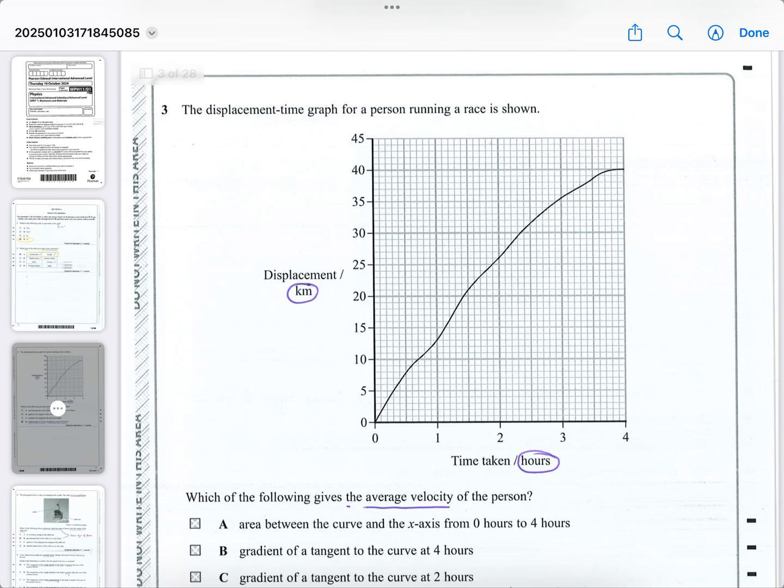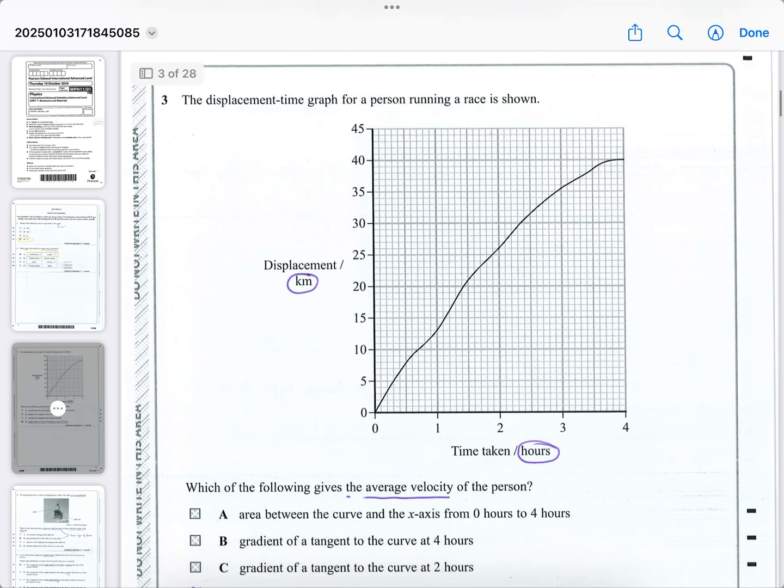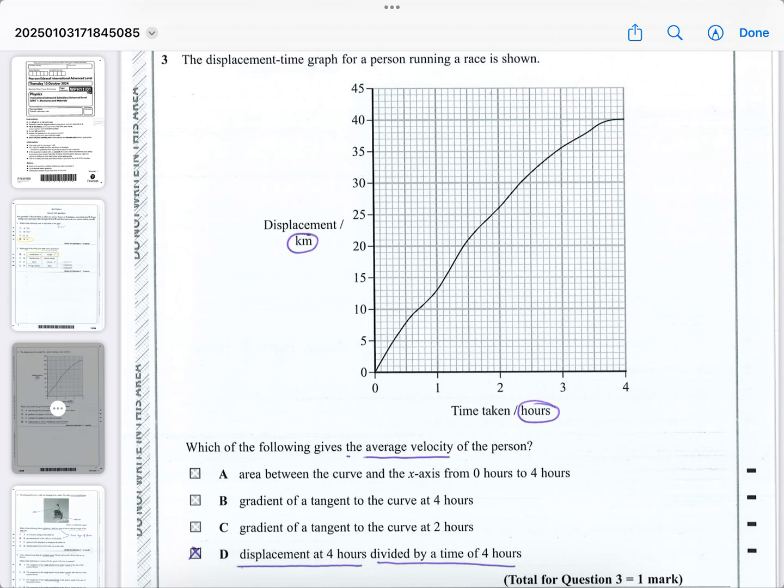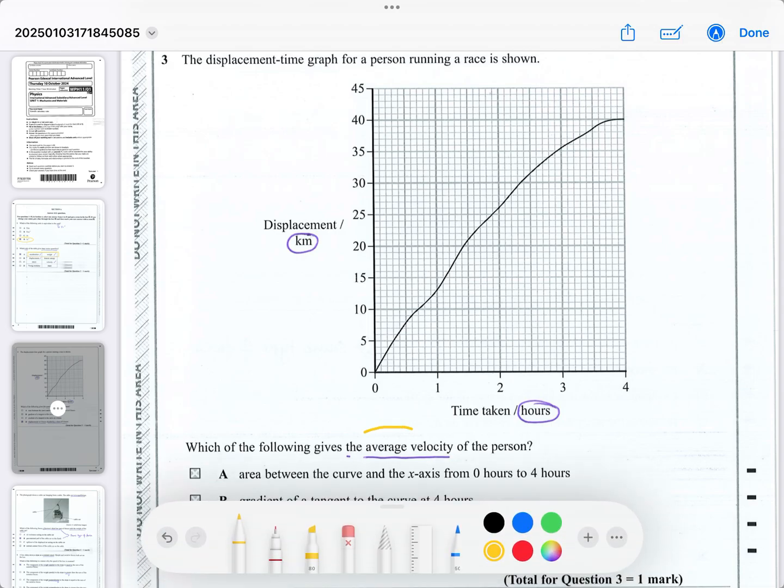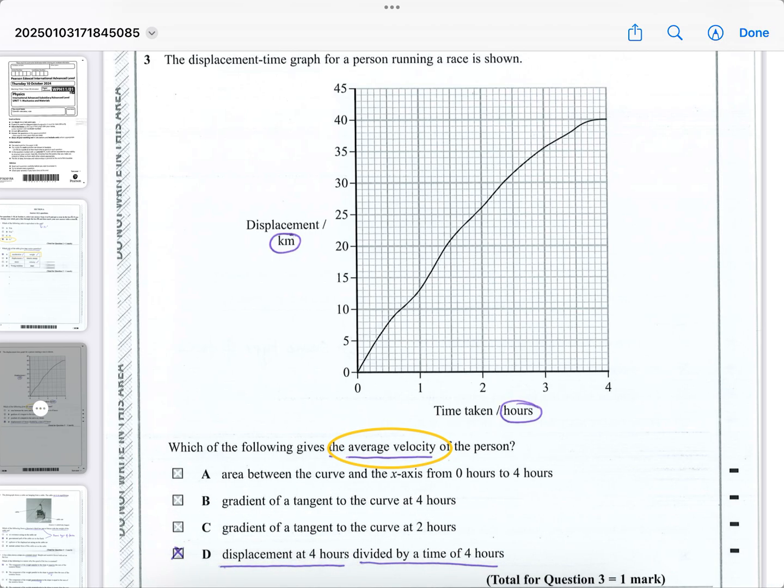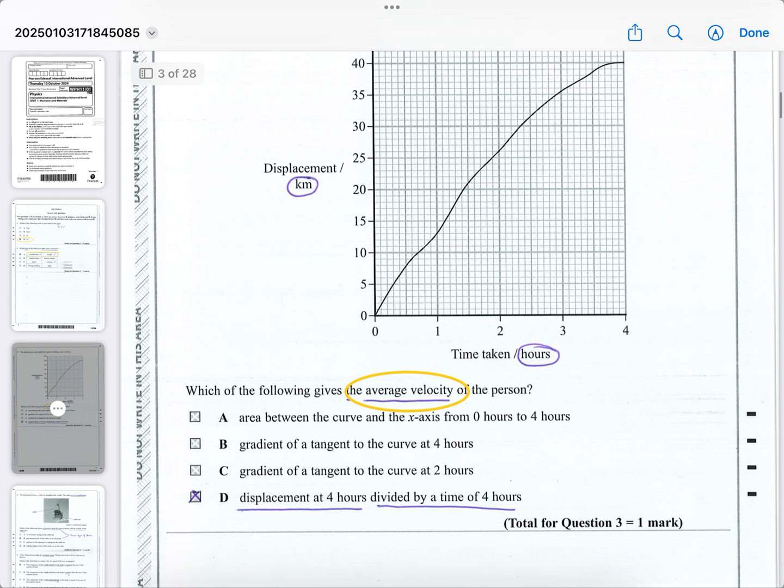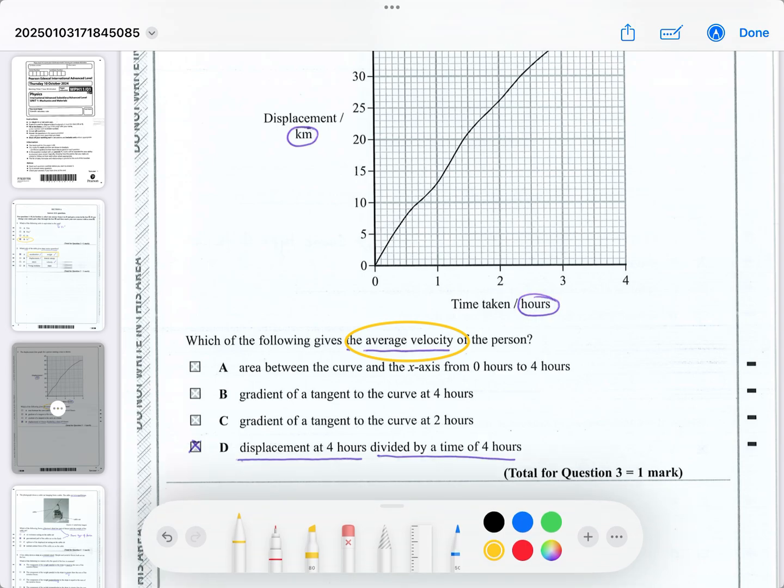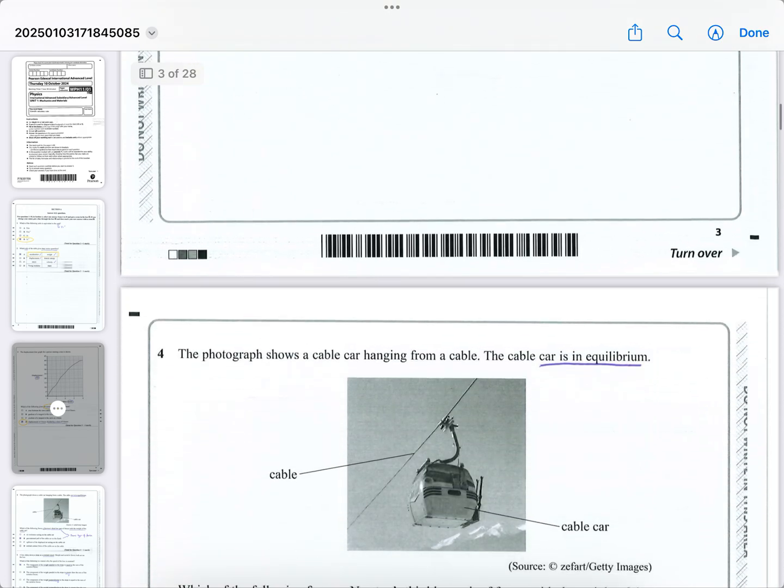Question three is a displacement time graph. So all you've got to check is that the units are kilometers per second per hour. The units, I've circled those. So when I'm reading the questions, I'm taking in all the information, and that's why I circle things to draw my attention, and in this case your attention, to these small points. They want to know which of the answers gives the average velocity. So average velocity is a total displacement divided by the total time, which is given by D. So that's the only one that's going to give you the average velocity for the trip. So far it's been a very straightforward start to this exam.